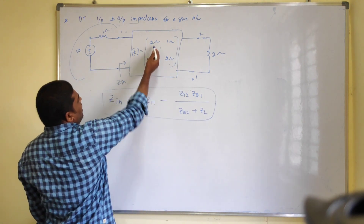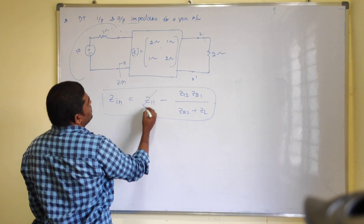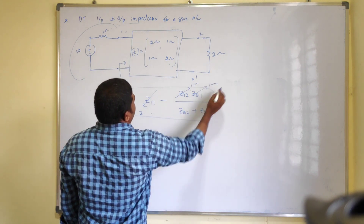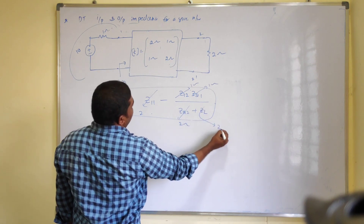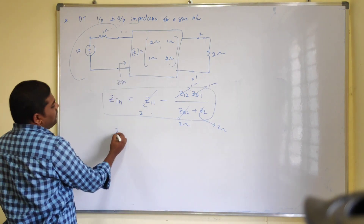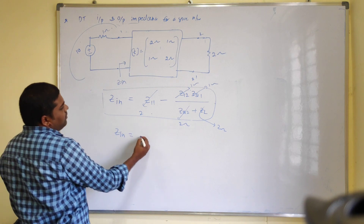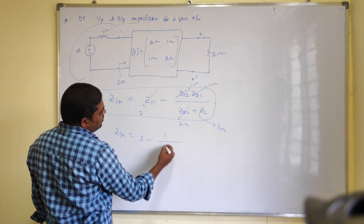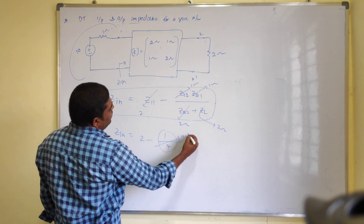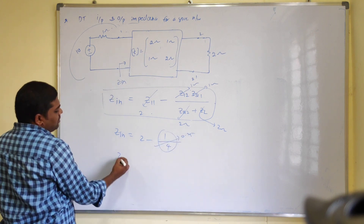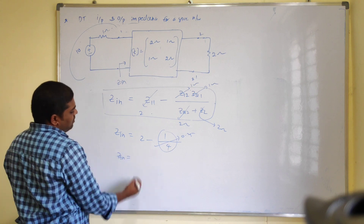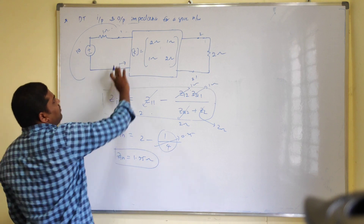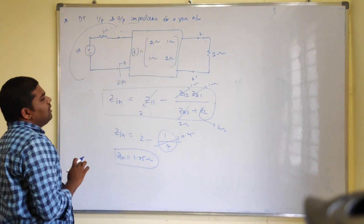We already have the parameters: Z11 = 2 ohms, Z12 = 1 ohm, Z21 = 1 ohm, Z22 = 2 ohms, and ZL = 2 ohms. So you calculate: Z_in = 2 minus (1×1)/(2+2) = 2 minus 1/4 = 2 minus 0.25 = 1.75 ohms. This is the input impedance for the given network.